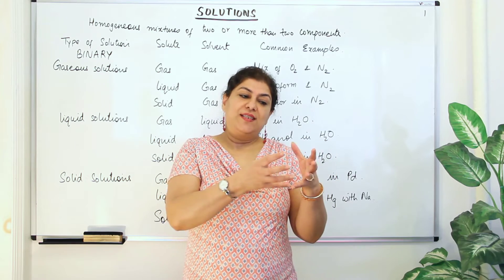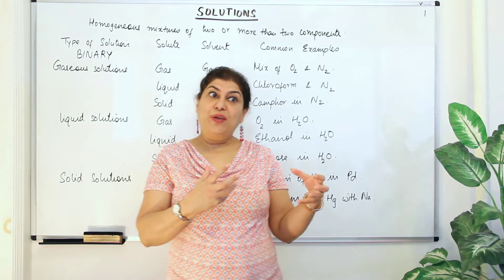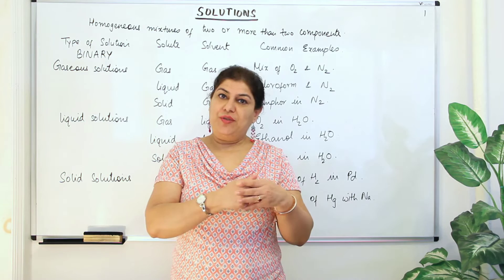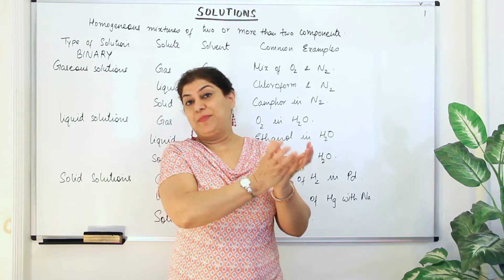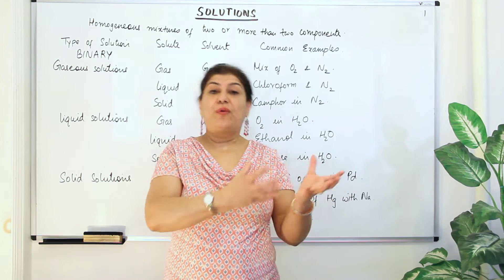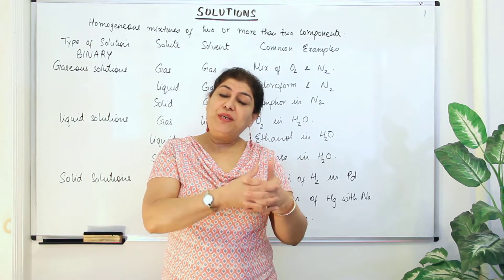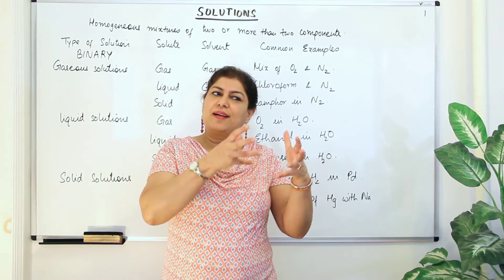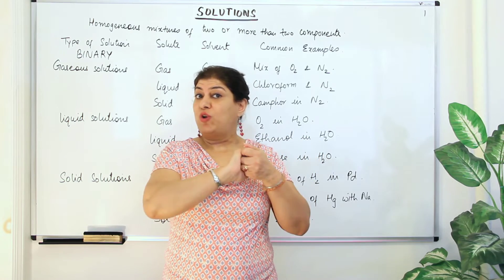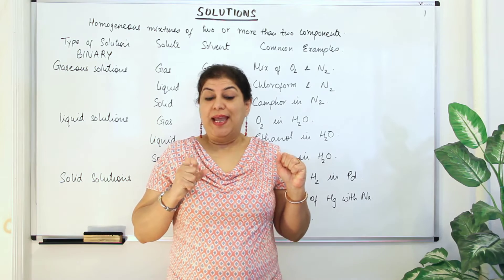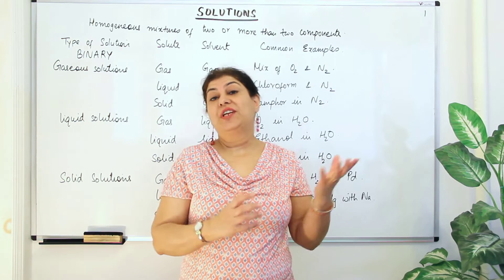A mixture is made by one or more components which are not chemically combined with each other. Unlike in compounds, where elements combine and form chemical bonds to produce a separate entity with different properties, in a mixture the properties reflect the constituent particles because they have not reacted with each other. There is no chemical bonding and no change in the nature of the substance.